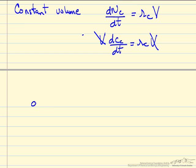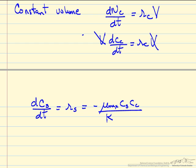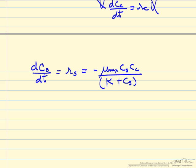We can write the rate of the concentration of substrate with time as the rate of the substrate reaction, which is minus µmax, concentration of substrate, concentration of cells over this constant K plus the concentration of cells. So this is one differential equation.